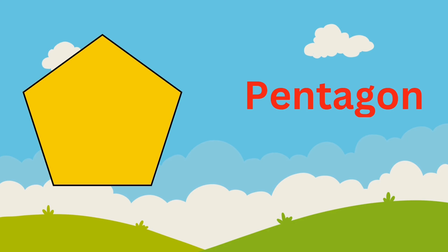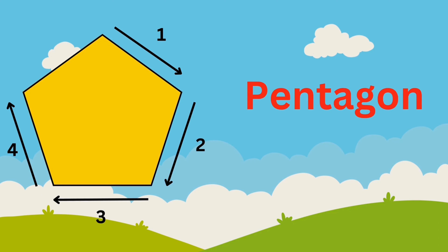The next shape we have is pentagon. A pentagon has five sides and five corners. Let's see which objects we have in our surroundings which are pentagon in shape.